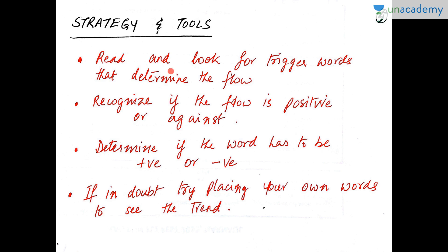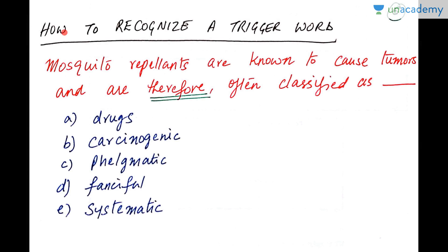The strategy for sentence completion is: read carefully and look for trigger words that determine the flow of the sentence. Determine whether the trigger word is moving the flow in a positive or negative direction, then determine if the word being asked for is positive, negative, or some other kind. If you're not sure what to put in, cover all the choices with one hand, look at the sentence, think of a word yourself, then look for a word that means that in the choices given. How do we recognize a trigger word?